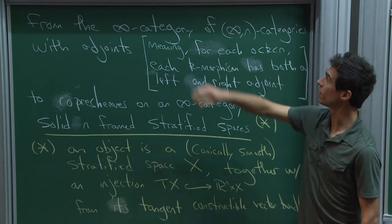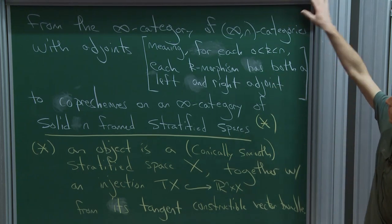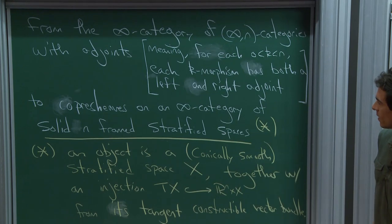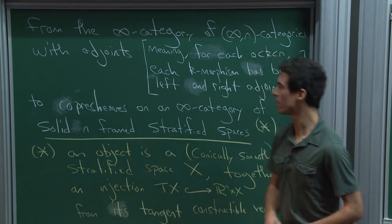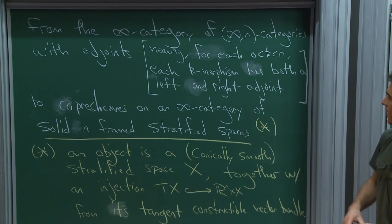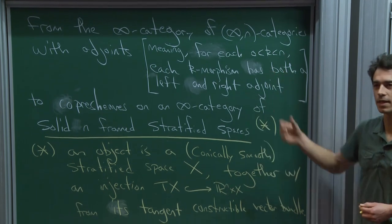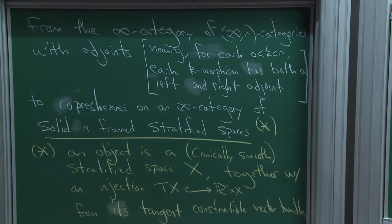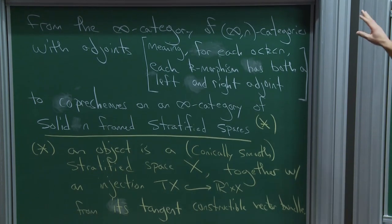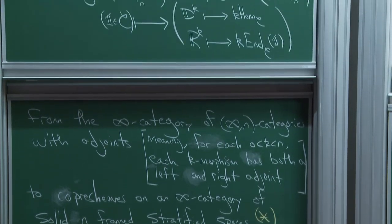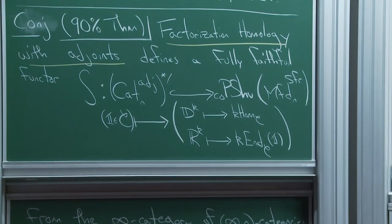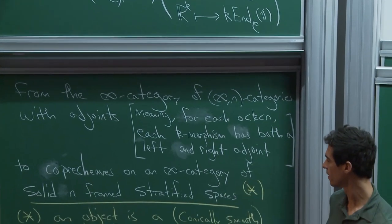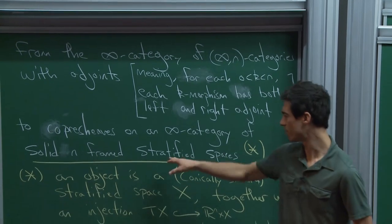The domain of this functor is an infinity category of infinity n-categories with adjoints. To say 'with adjoints' means that each k-morphism has both a left and a right adjoint for k between 0 and n. The codomain is space-valued functors on a very peculiar category of solidly n-framed stratified spaces.